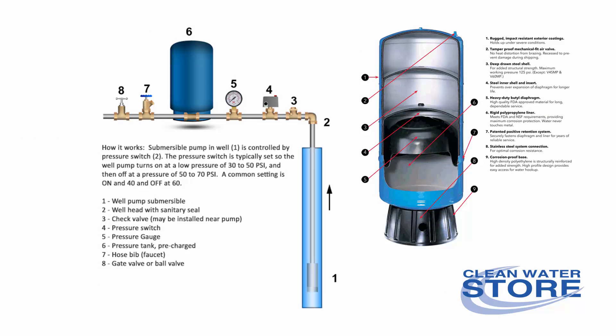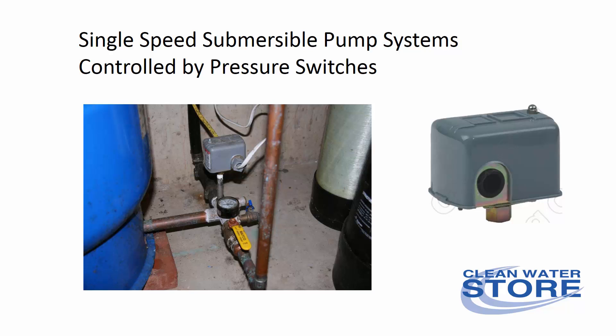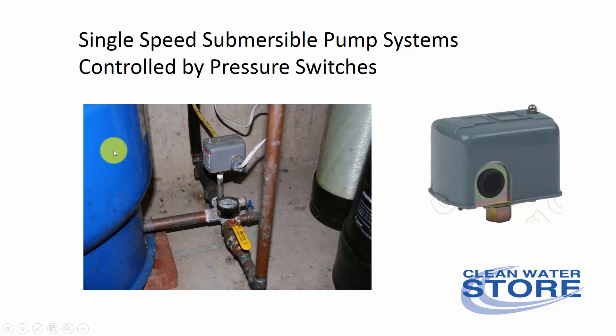Here's how it works. Submersible pumps in the well are controlled by a pressure switch. The pressure switch is typically set so the well pump turns on at a low pressure and off at a higher pressure. A common setting is on at 30, off at 50, or on at 40, off at 60. These systems are single speed submersible pumps. Here you see the pressure switch, pressure gauge, and a single pipe going in and out of the pressure tank. Water coming from the well flows into the pressure tank, builds up pressure, and then the pressure switch shuts off the well pump.